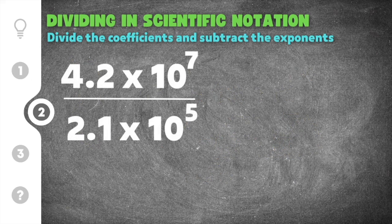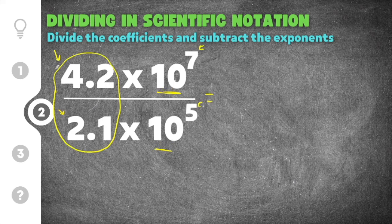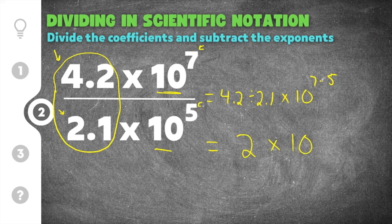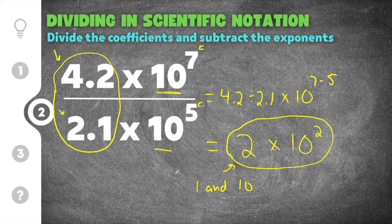Our second practice problem gives us 4.2 times 10 to the 7th divided by 2.1 times 10 to the 5th. We have coefficients out front, base of 10, and exponents for both numbers. We divide the coefficients: 4.2 divided by 2.1, times 10 to the power of 7 minus 5. Simplifying: 4.2 divided by 2.1 is 2, times 10 to the 2nd power. The coefficient 2 is between 1 and 10, so this is correct scientific notation.